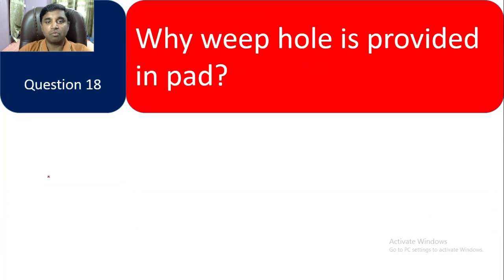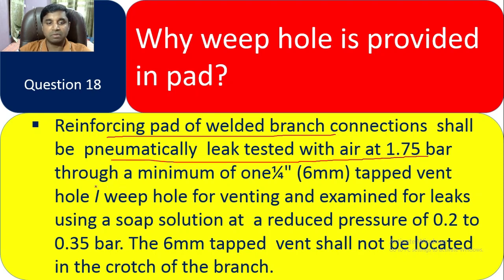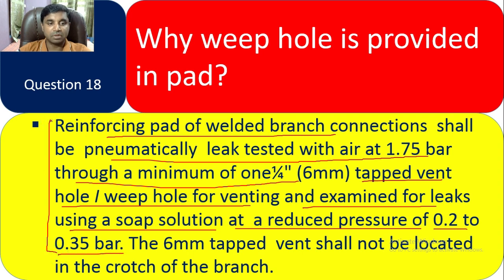Question 18: Why is a weep hole provided in a pad? The reinforcement pad of a welded branch connection shall be pneumatically leak tested with air at 1.75 bar through a minimum of one 1/4-inch tapped vent hole or weep hole, for venting and examination for leaks using a soap solution, at a reduced pressure of 0.2 to 0.35 bar. The vent hole shall not be located at the crotch of the branch.